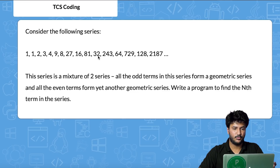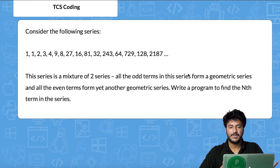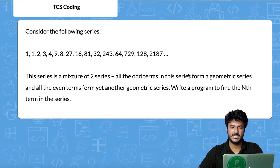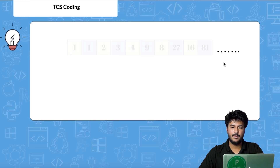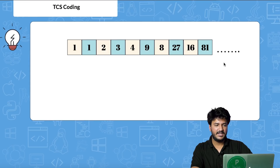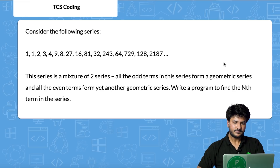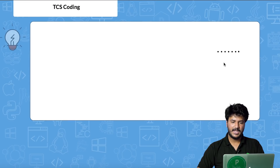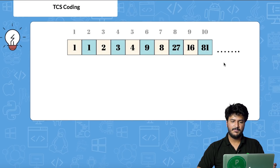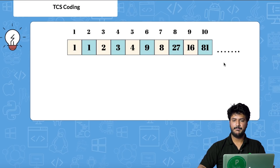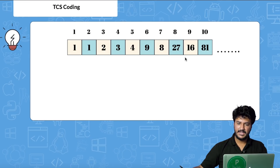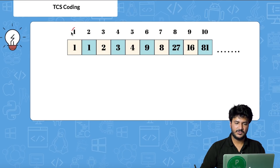The 11th term happens to be 32, so you just have to print 32, not the whole series. But you still have to build the logic for the whole series. Let me walk through the series in detail. Each element is placed in a numbered position, and the series can go on.